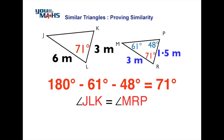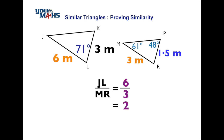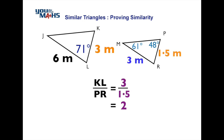Now we need to compare pairs of sides. We look for the large side on the large triangle and find the corresponding large side on the smaller triangle, then put them in a ratio: 6 divided by 3 equals 2. We then check the other pair of matching sides — in the larger triangle, 3 matches 1.5 metres on the smaller triangle, so 3 divided by 1.5 is also 2.